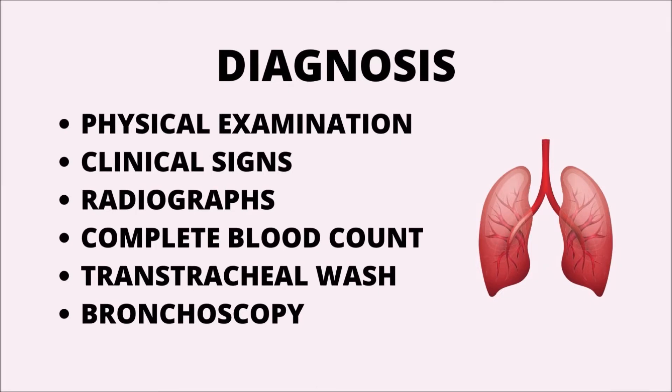Diagnosis of acute bronchitis is largely dependent on the presence of compatible clinical signs and physical examination findings. Radiographs of the lungs are not often helpful in confirming the diagnosis but can demonstrate pneumonia that may accompany the bronchitis and can rule out other problems in the thoracic cavity. A complete blood count may show an elevated white blood cell count in animals with bacterial infections but may be normal in other cases.